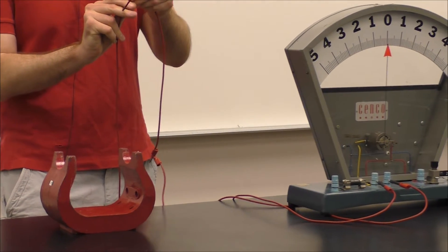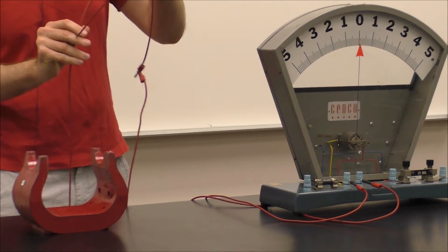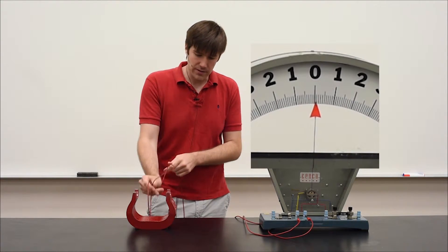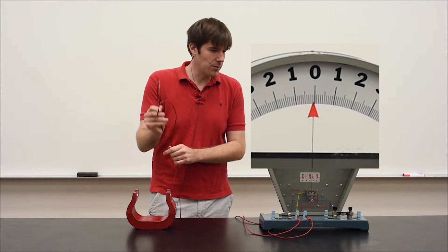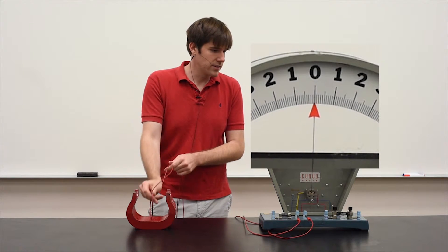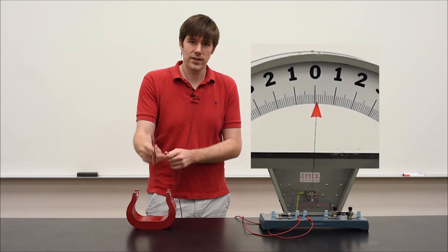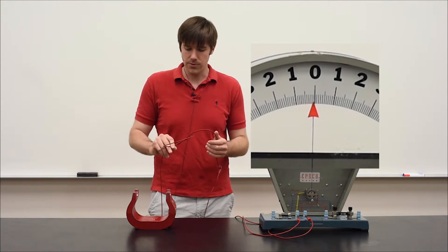Now if I change the cross-sectional area of my loop and move it in the magnetic field, by Faraday's Law, you can see that we have an increased induced current because it's proportional to the cross-sectional area of the flux going through.